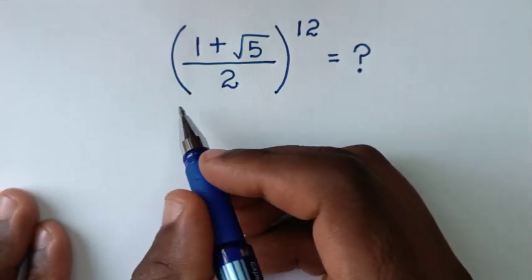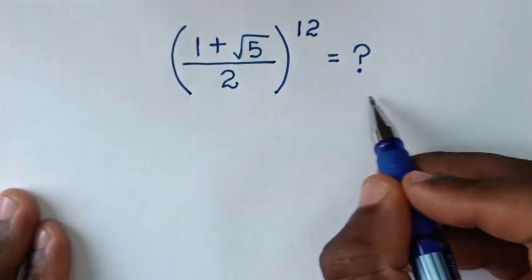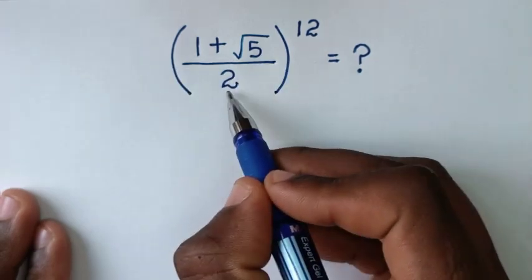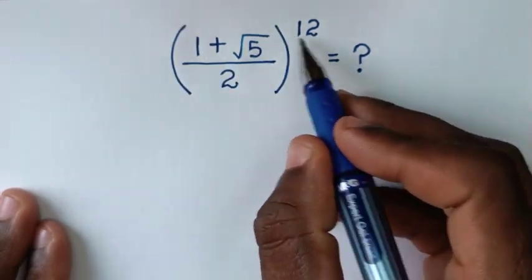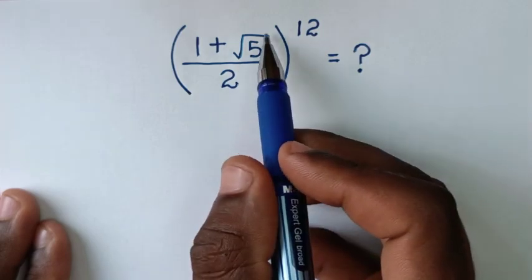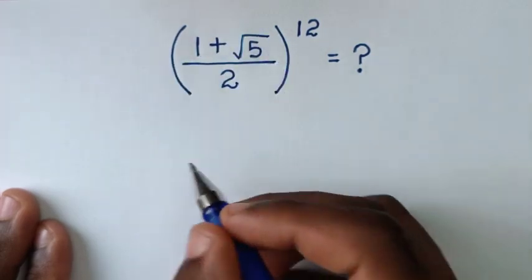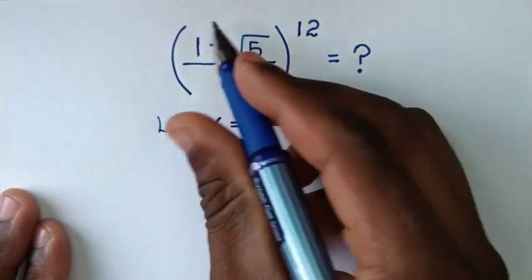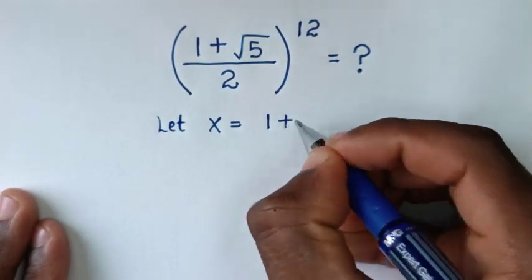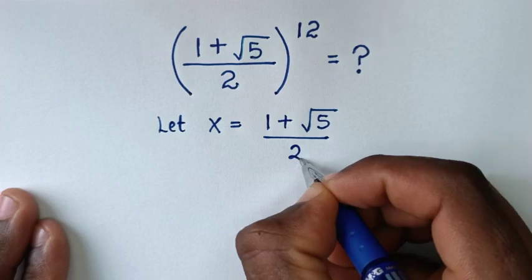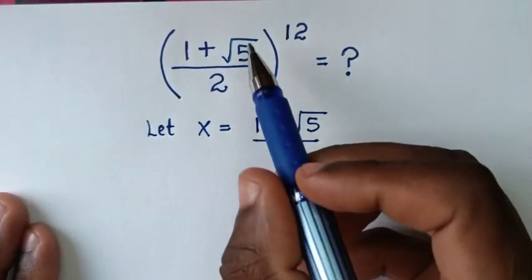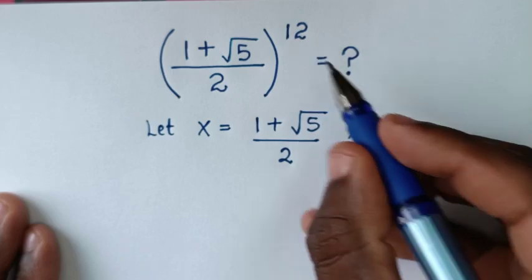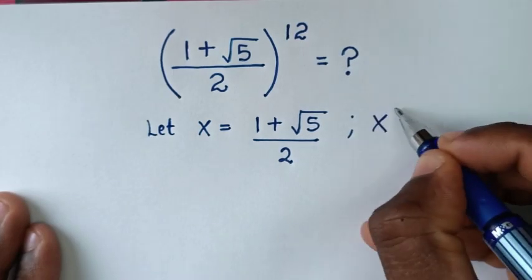Hello, you are welcome to solve this math problem by simplifying (1 plus square root of 5) over 2, bracket, power of 12. First we'll start by letting x equal to the inside of the bracket, which is (1 plus square root of 5) over 2. So we'll be finding the value of x to the power of 12.